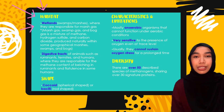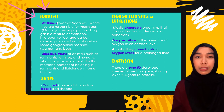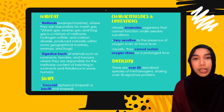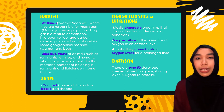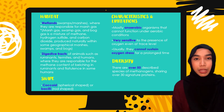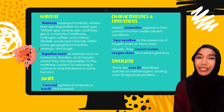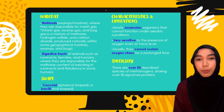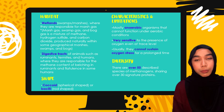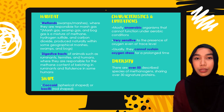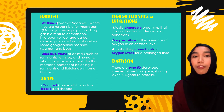You can usually find methanogens in swamps, wetlands, marshes, and bogs, and they are responsible for marsh gas — a mixture of methane with hydrogen sulfide and carbon dioxide. You can also find methanogens in the digestive tracts of animals like cows and even humans. They are responsible for belching in some ruminants and flatulence in humans.